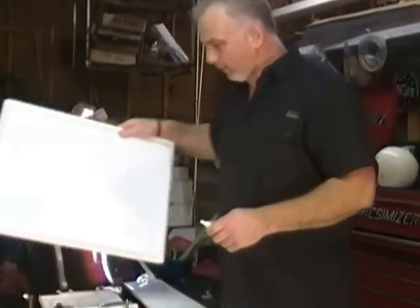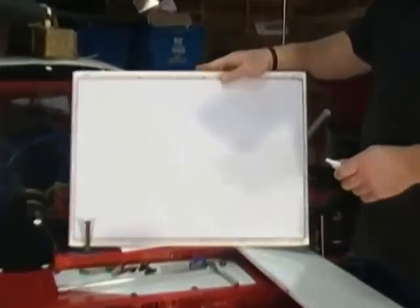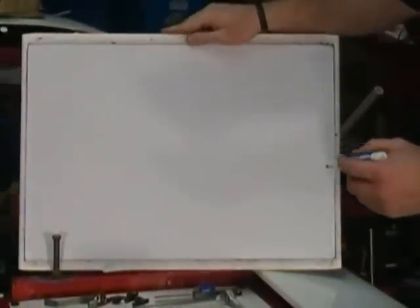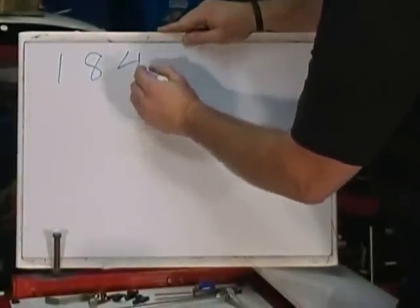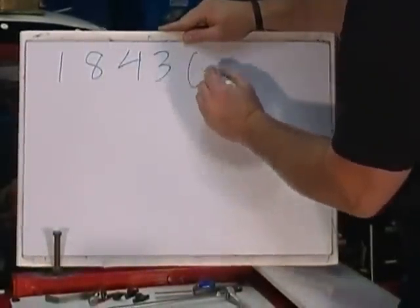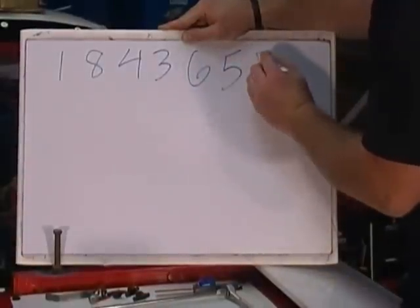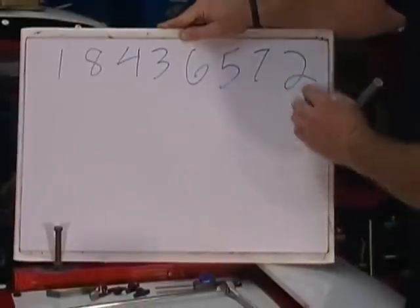Let's go ahead. We've got a little whiteboard here, and on a Chevrolet engine, whether it be a small block or a big block, the firing order is 1, 8, 4, 3, 6, 5, 7, 2.